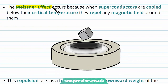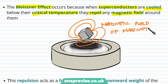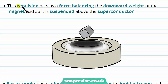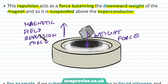The Meissner effect occurs because when superconductors are cooled below their critical temperature, they repel any magnetic field around them. The superconductor repels the magnetic field of the magnet, exerting an upward force that causes the magnet to levitate. This repulsion balances the downward weight of the magnet, suspending it above the superconductor — the vertical forces are balanced.